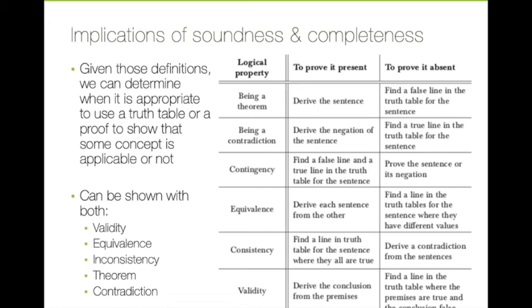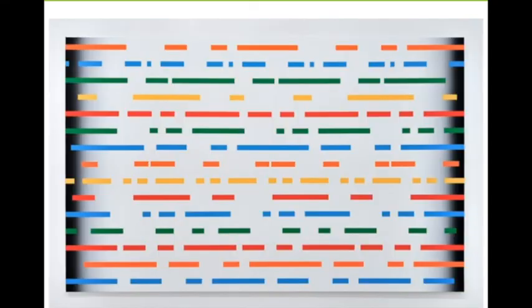We can use this information to determine how to test for any of these properties. For example, if you're asked to test equivalence, you could either use two proofs, or you could use a truth table looking at both sentences to check whether they have the same truth value in each row.